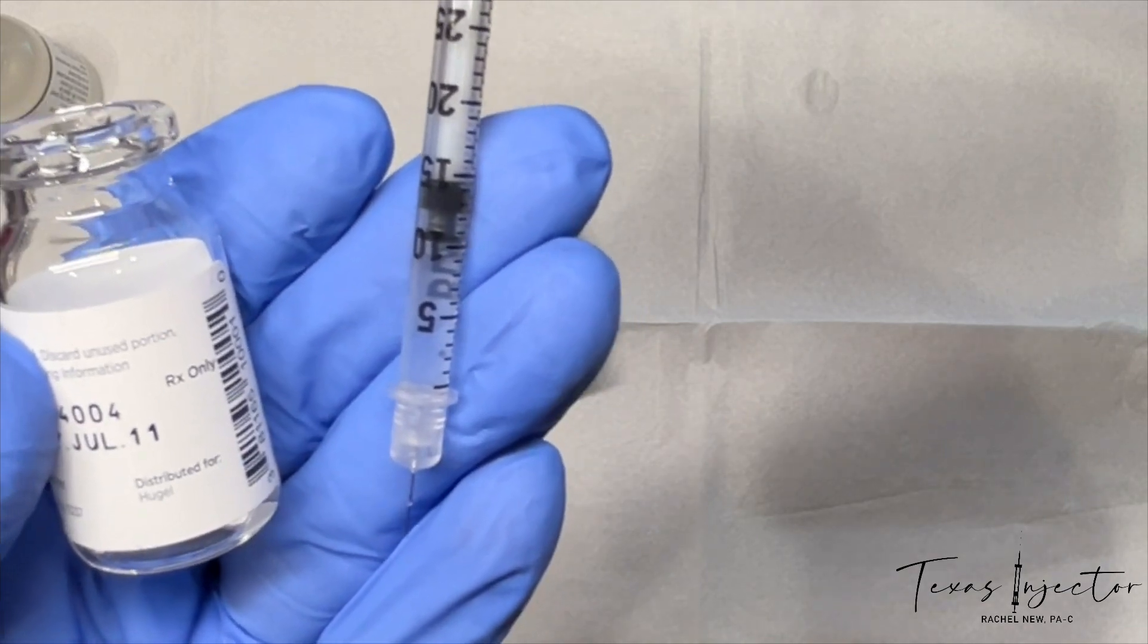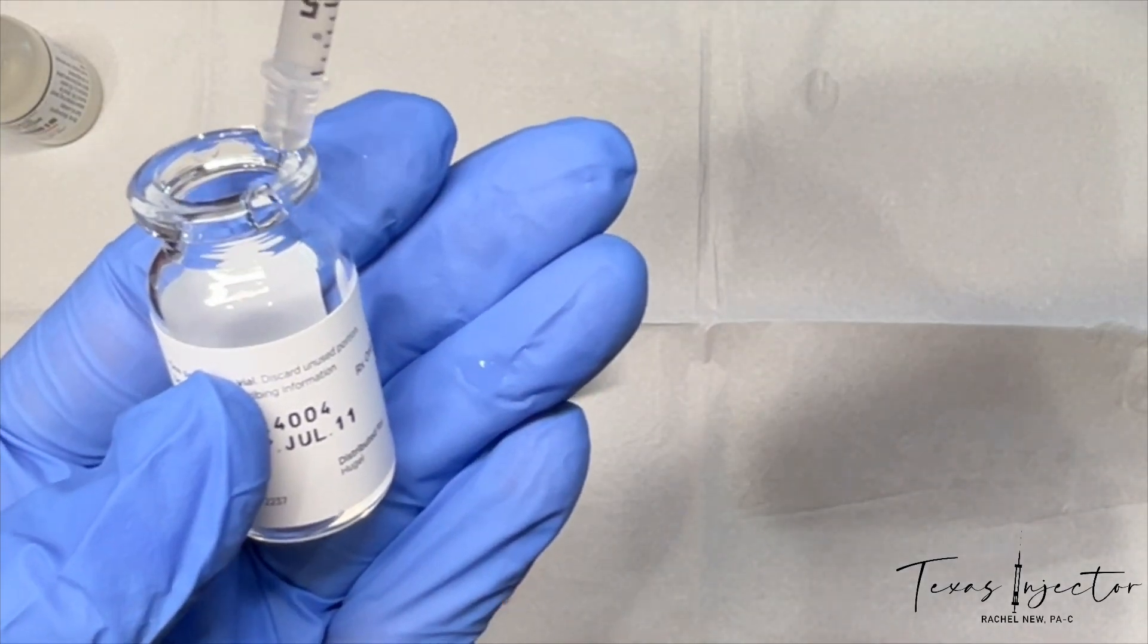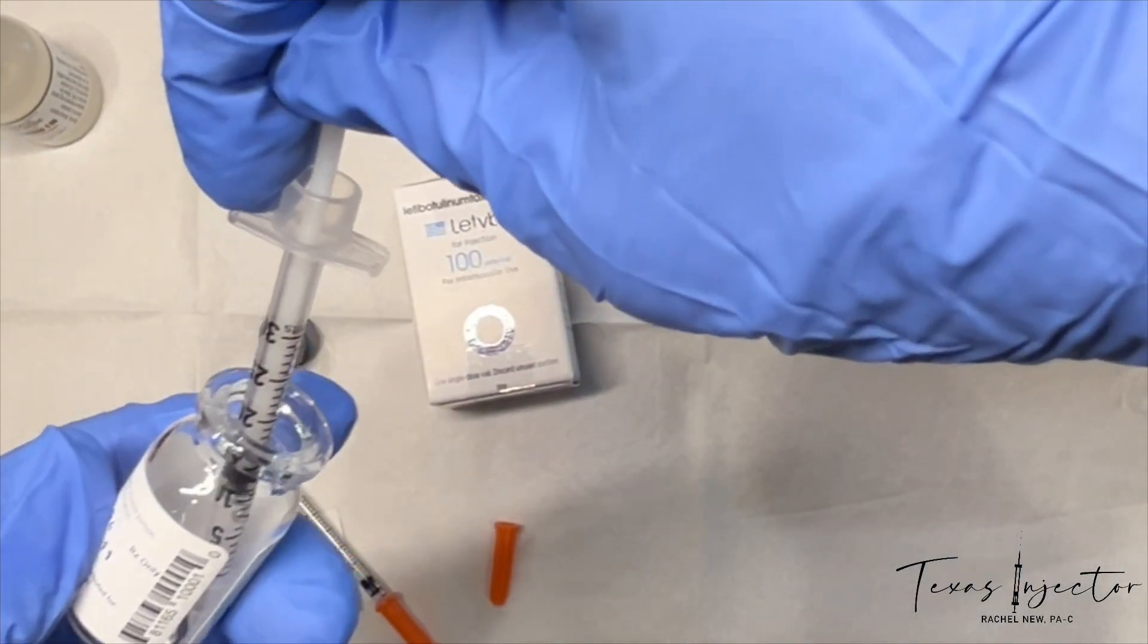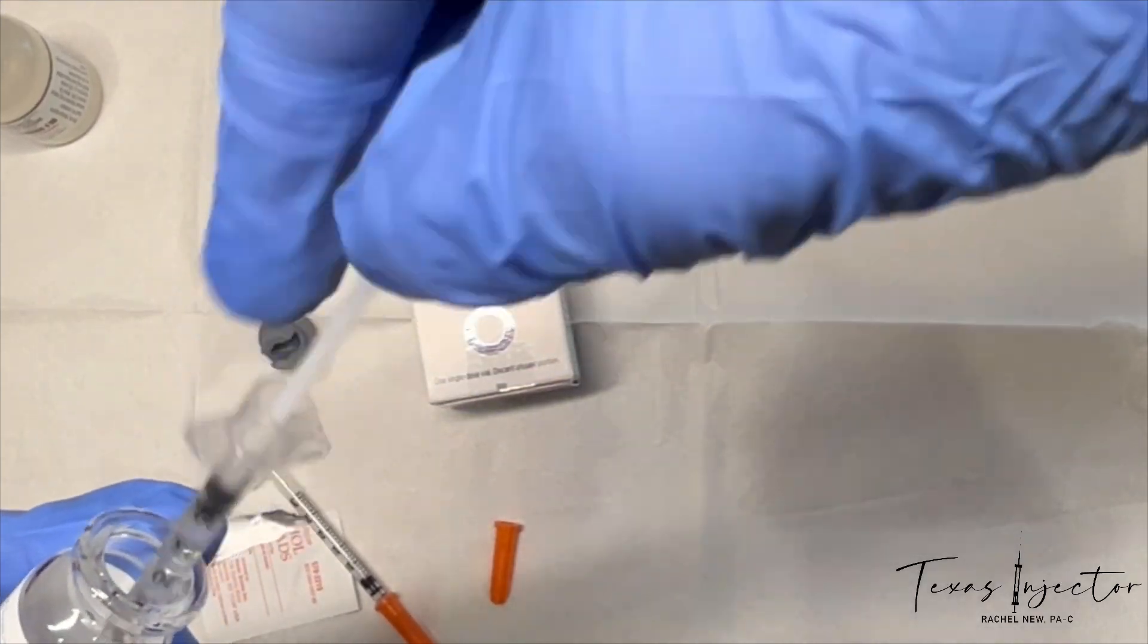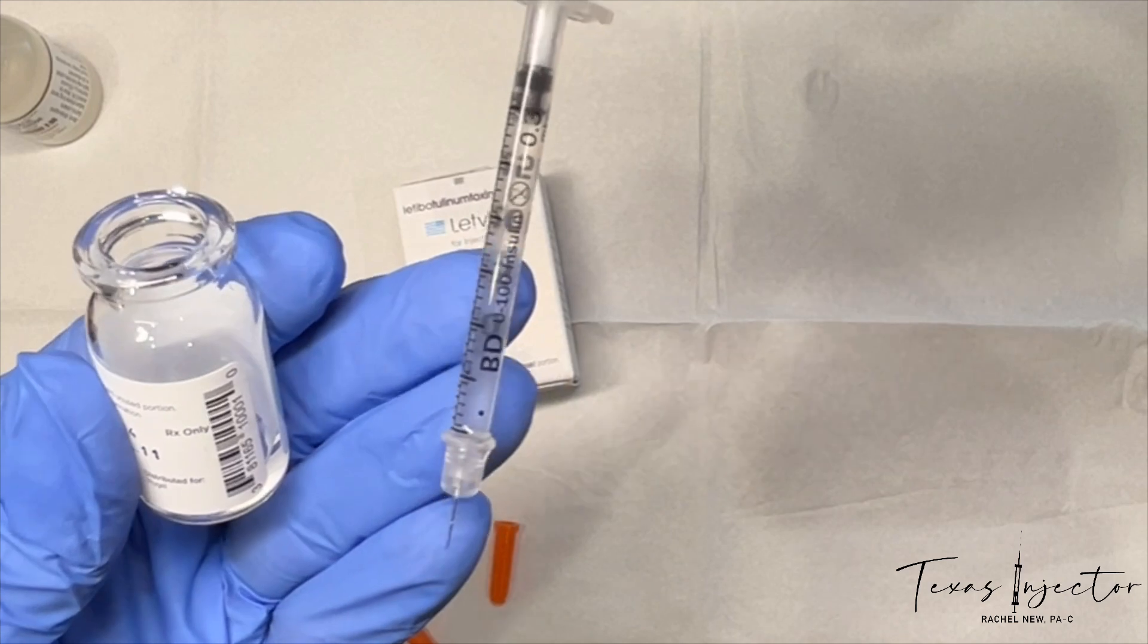If I fill this insulin syringe completely, this is going to be 12 Latibo units. So this 30-unit insulin syringe is 12 Latibo units.